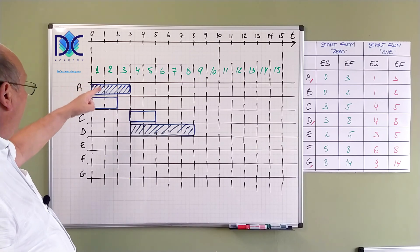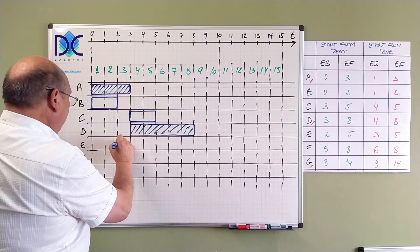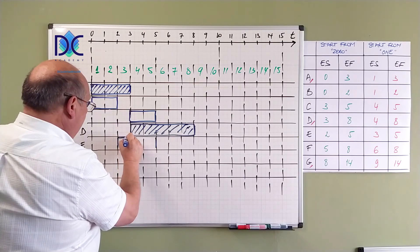E from 2 till 5. From 2 till 5, 2, 3, 4, 5. Here it is.